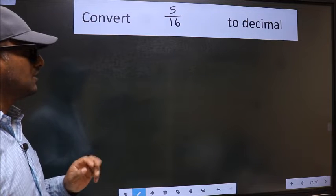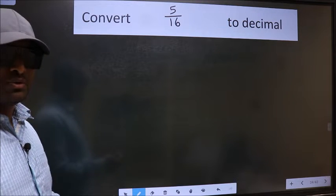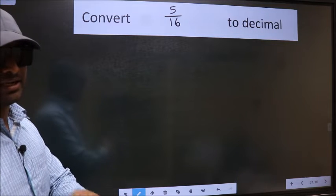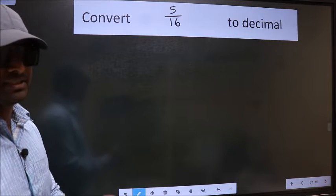Convert 5 by 16 to decimal. To convert to decimal, we should divide. To divide, we should frame it in this way.